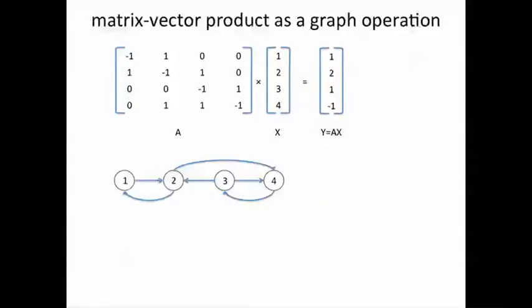Now what about the vector x itself? We assume each vertex holds a value which is nothing but the element of the x vector in the appropriate position corresponding to that vertex. So the vector one, two, three, four is distributed across the vertices of the graph as just one, two, three, four—one element per vertex.